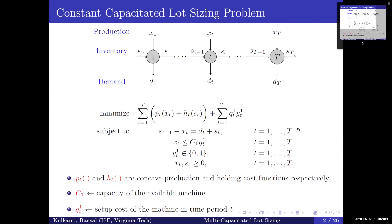Let us start with the constant capacitated lot sizing problem. Suppose you are given T time periods in the planning horizon, and in every time period you are given the demands. How do we schedule the production and inventory so that the overall production and inventory costs are minimized? Moreover, in every time period we have a machine with a capacity of C1, and the setup cost of that machine is Q1t in that particular time period. We also assume that the production and holding cost functions are concave.